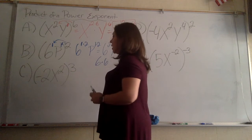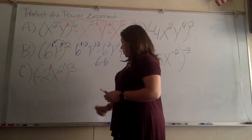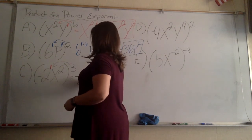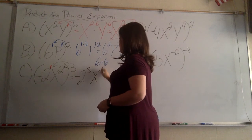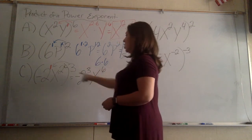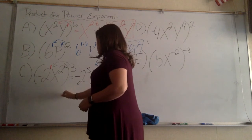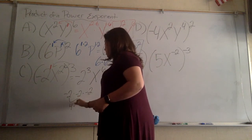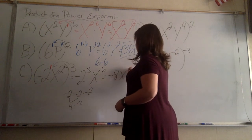There's a missing exponent here, so I need to add that extra 1 and distribute with 3. This gives me a negative 2 to the third. 2 times 3 gives me 6 for x, and 1 times 3 gives me 3. Multiplying out: negative 2 times negative 2 times negative 2 — 2 times 2 gives me 4, times negative 2 gives me negative 8. Nothing happens with x⁶, so I leave it as negative 8x⁶.